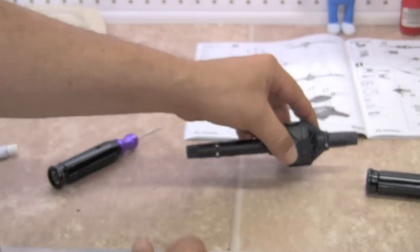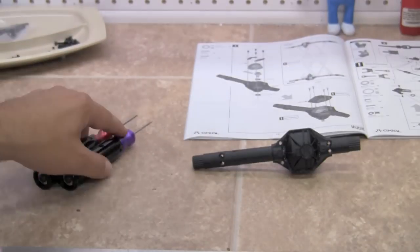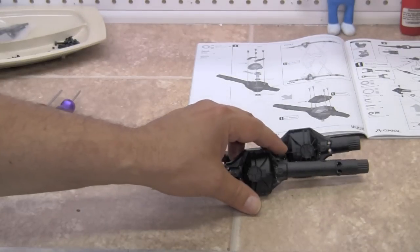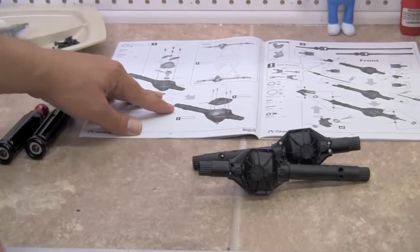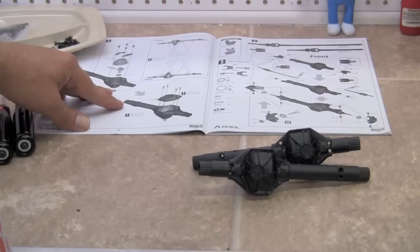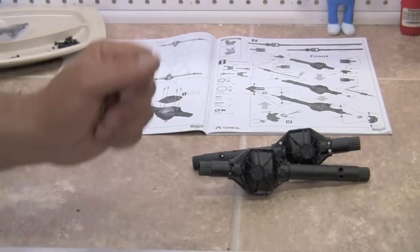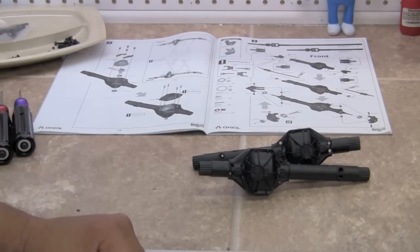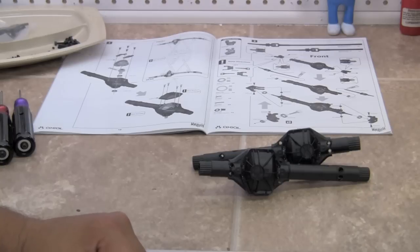All right, so we've got our two diffs built. We're going to go ahead and lay out all of our parts for step number three, which looks like there's lots of squiggly lines on that one. So we're going to get it all together. We'll be back and we'll start on the next step.